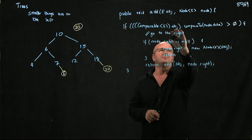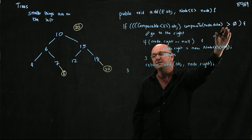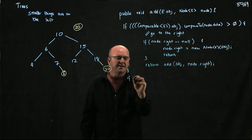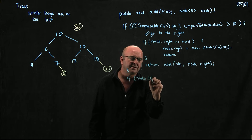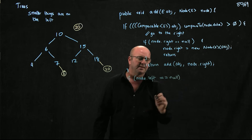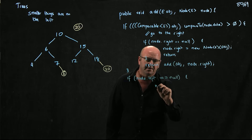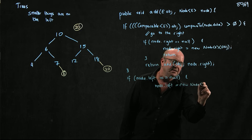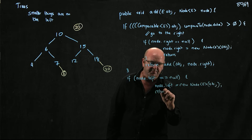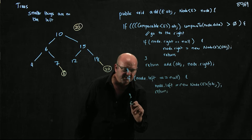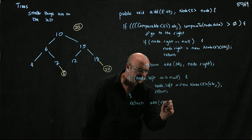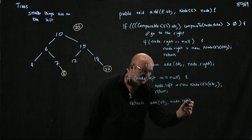If the compareTo result is not greater than zero, we go to the left and we have essentially the same code. If node.left is equal to null, then node.left equals new Node<E>(object) and return; otherwise we return add(object, node.left).